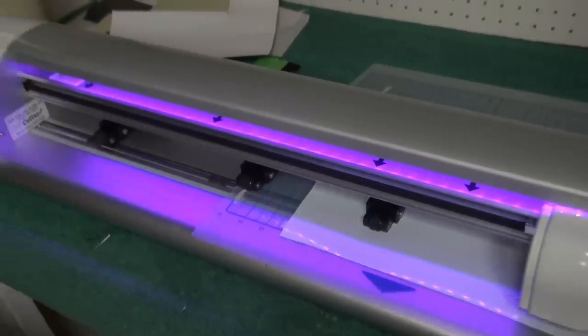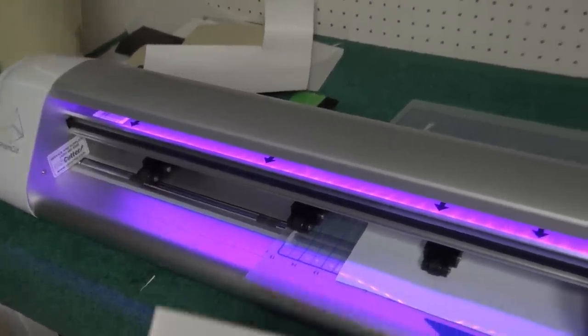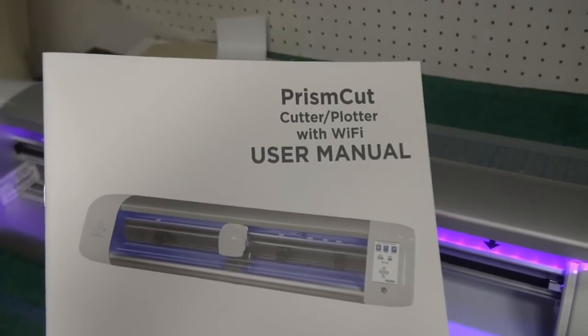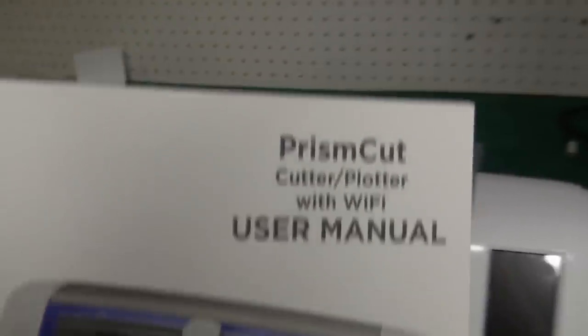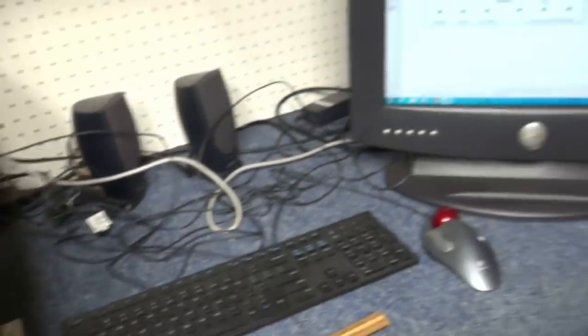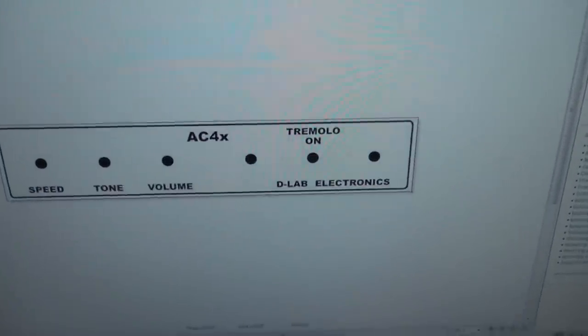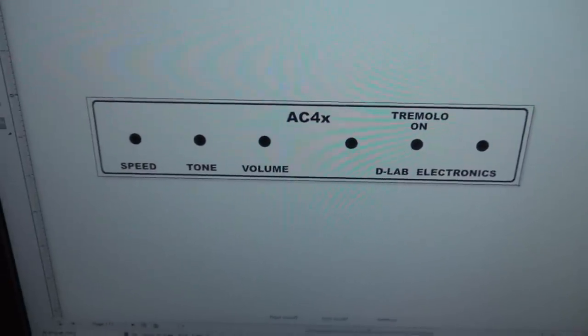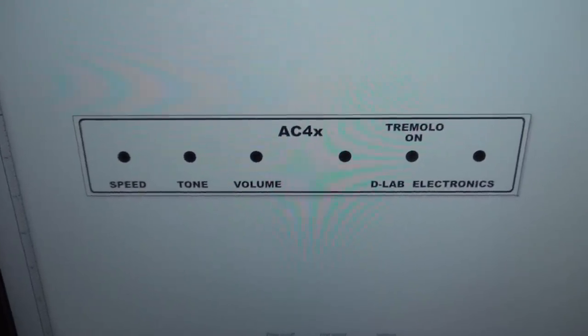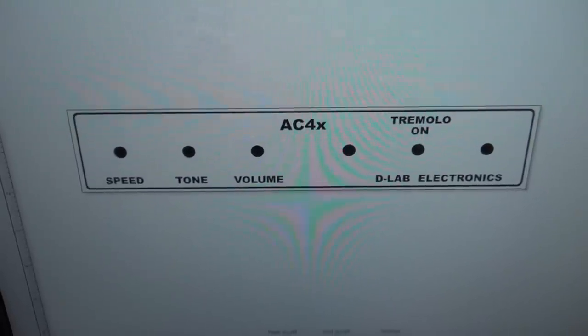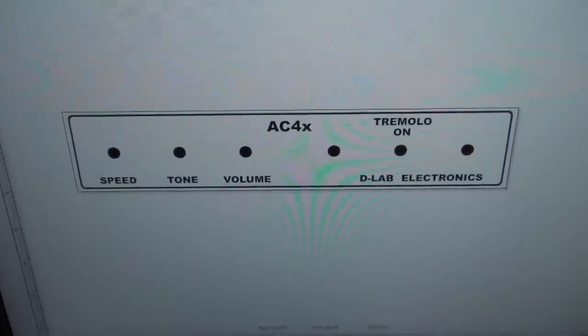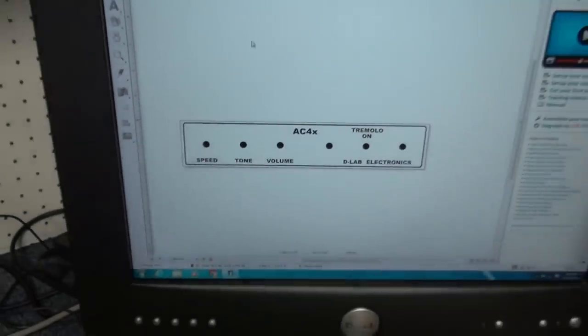So to generate the custom artwork that you see on my control panels I use this prism cut system. It comes with CAD software called Vinyl Master Cut. It allows you to lay out your control panels to scale. So this is the panel for the AC4X. In a second I'll spool it and you'll be able to watch the cutter in action.